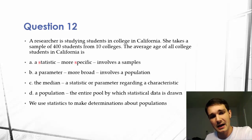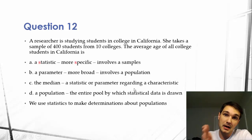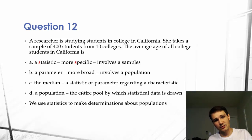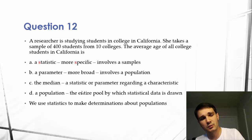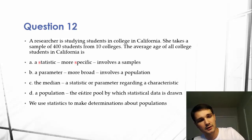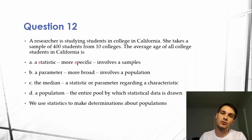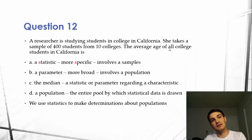The median is a type of statistic or parameter regarding a characteristic — it's the middle number in a set of data. But it really is the least correct answer here; it has nothing to do with what we're looking for. And a population is the entire pool from which statistical data is drawn — that's all college students in California.